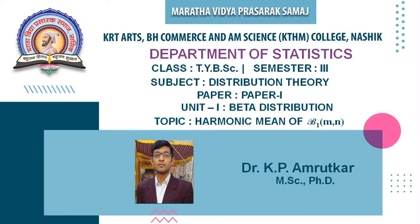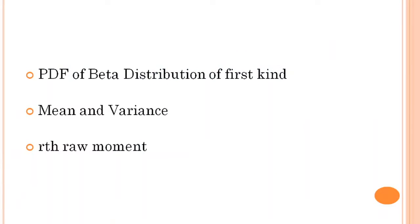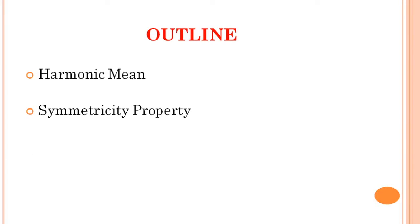Hello friends. In the last lecture, we covered the beta distribution of first kind — its density function, r-th raw moment, mean, and variance. In today's lecture, we will go through the harmonic mean of beta distribution and also discuss the symmetricity property of beta distribution of first kind.